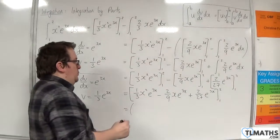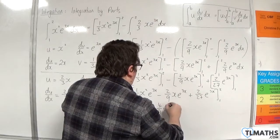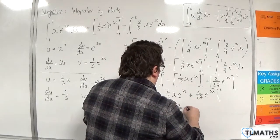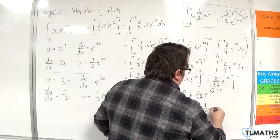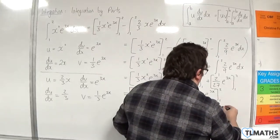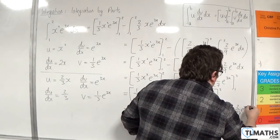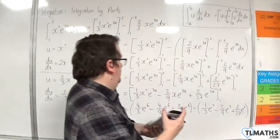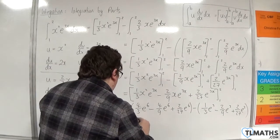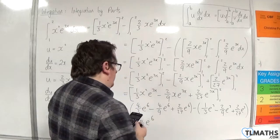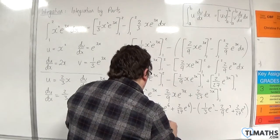Substituting in x equals 2, we get 4 thirds e to the 6, take away 4 ninths e to the 6, plus 2 over 27 e to the 6. Then substituting in x equals 1, we get 1 third e to the 3, take away 2 ninths e to the 3, plus 2 over 27 e to the 3. Combining these gives 26 over 27 e to the 6, take away 5 over 27 e to the 3.